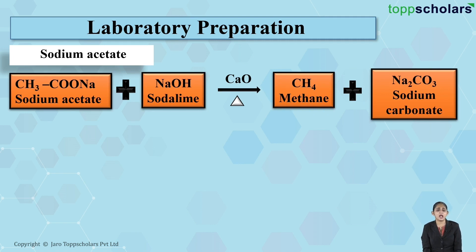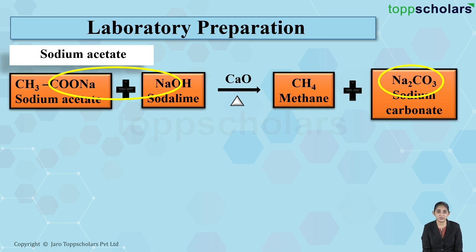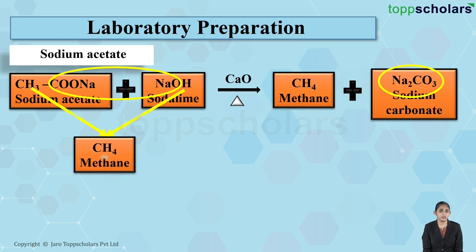Let's see how sodium carbonate and methane are actually formed. The COO⁻Na⁺ of sodium acetate and NaOH of sodium hydroxide combine to give sodium carbonate, that is Na₂CO₃. What is left behind is CH₃ of sodium acetate and H of sodium hydroxide, which combine to give CH₄, that is methane. So, when you react sodium acetate with soda lime, it gives you methane and sodium carbonate.